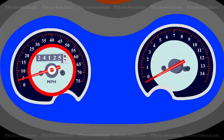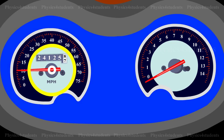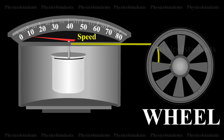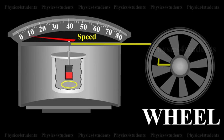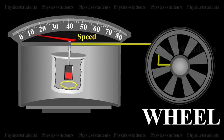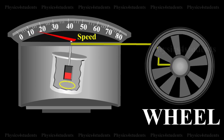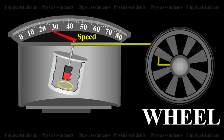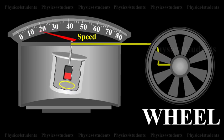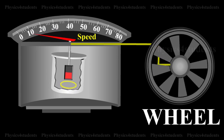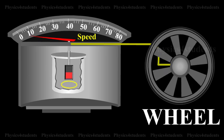In a speedometer, the magnet rotates according to the speed of the vehicle. The magnet rotates inside an aluminium cylinder, i.e. the drum, which is held in position with the help of hairsprings. Eddy currents are produced in the drum due to the rotation of the magnet, and it opposes the motion of the rotating magnet. The drum in turn experiences a torque and gets deflected through a certain angle depending on the speed of the vehicle.